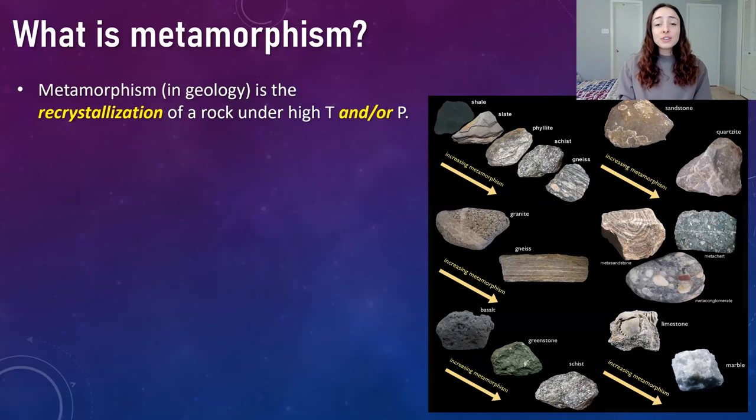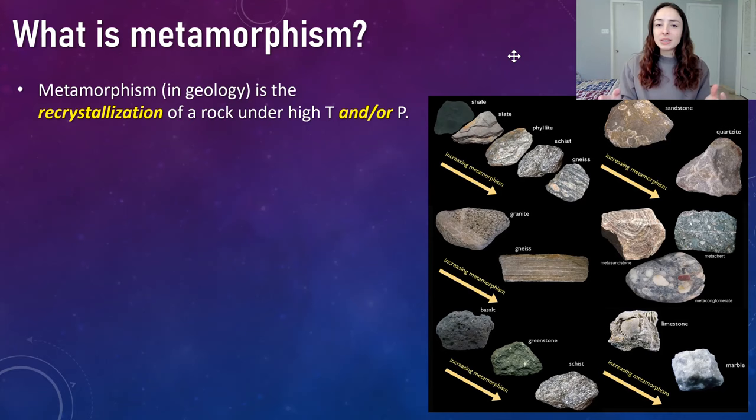First, what is metamorphism? Metamorphism in geology is the recrystallization of a rock under high temperature and/or pressure. Different types of metamorphism have different amounts of pressure and temperature acting on the rock. For example, contact metamorphism is really more heat than pressure, and regional metamorphism is more so heat and pressure causing the metamorphism of that rock.